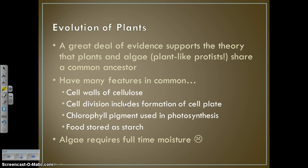There's a great deal of evidence that supports the idea that plants and algae, which of course are plant-like protists, share a common ancestor. Some of that evidence is that they both have cell walls made of cellulose. Cell division includes the formation of a cell plate. The chlorophyll pigment is used during photosynthesis — that's the stuff that traps the sunlight. And food is stored as starch. The main difference between plants and plant-like protists is that plant-like protists, or algae, require a full-time source of moisture.